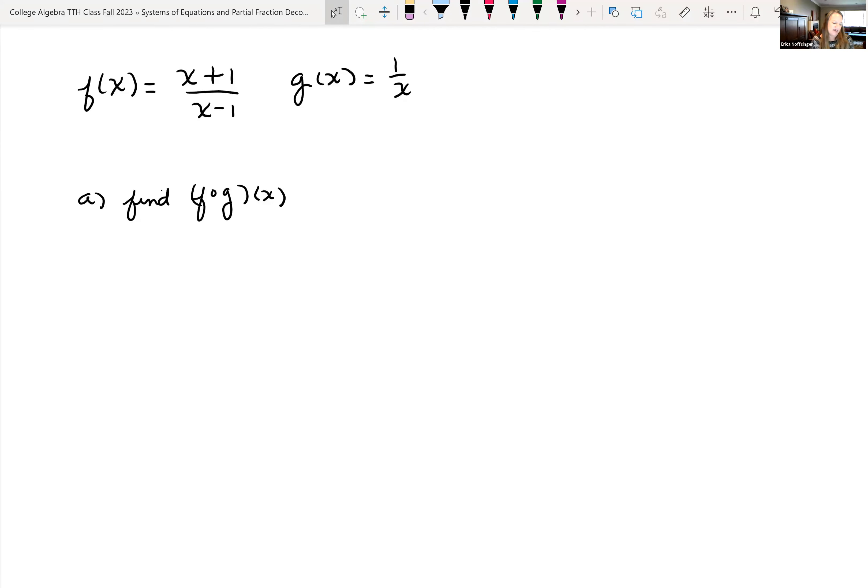Okay, so we're looking at an example where we have f of x equals x plus 1 all over x minus 1, and g of x is equal to 1 over x.